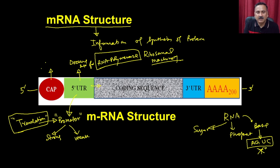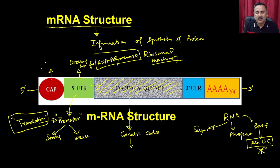Next is the coding sequence — this is the region that gives you the protein. It provides information in terms of the genetic code. These codes are read by the ribosomal machinery as well as by the tRNA, and that is how it helps in protein synthesis. Genetic information is encoded in the form of genetic code, and each genetic code corresponds to an amino acid. These amino acids are then added into the ribosomal machinery via the peptide bond.